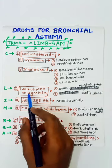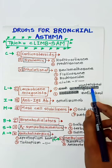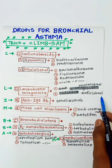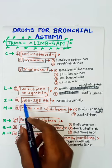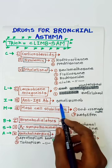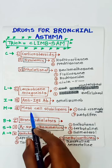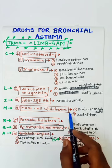Then leukotriene antagonists — two drugs: montelukast and zafirlukast. Then I for anti-IgE antibody — only one drug: omalizumab. And then mast cell stabilizers...